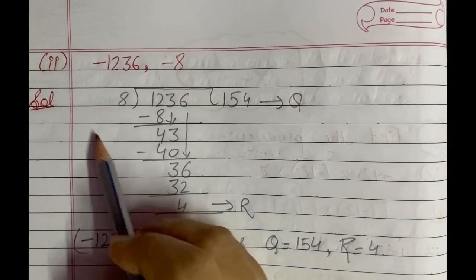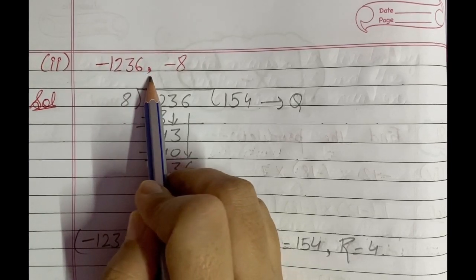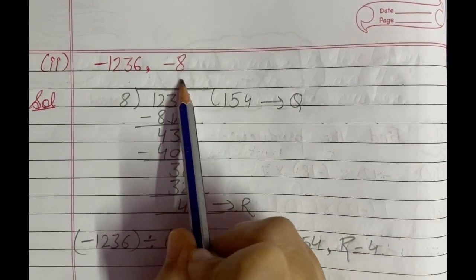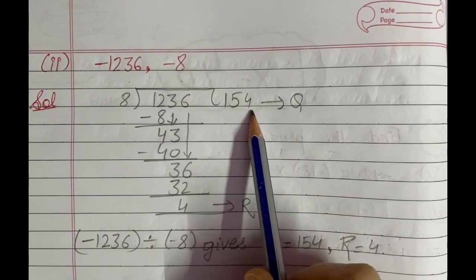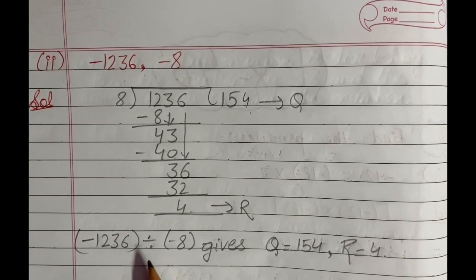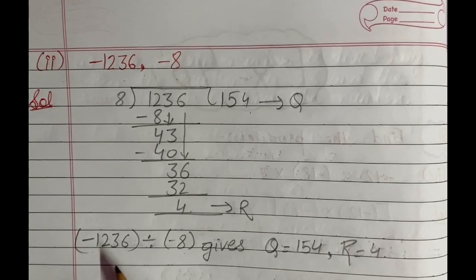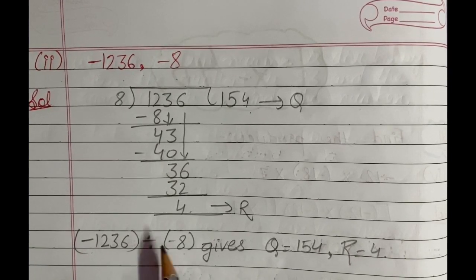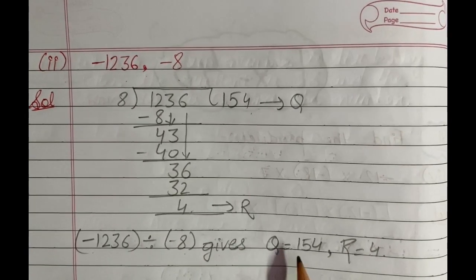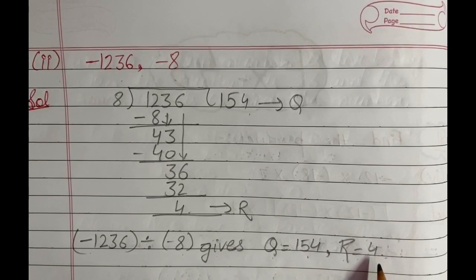Next, the second part: (-1236, -8). We divide 1236 by 8, getting quotient 154 and remainder 4. Since we are dividing -1236 by -8, both integers are negative, so according to the rules, the answer will be positive. Quotient is 154 and remainder is 4.